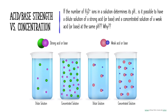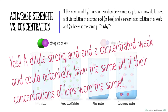The second question: if the number of hydronium ions determines pH, is it possible for a dilute solution of a strong acid and a concentrated solution of a weak acid to have the same pH, and why? The answer is yes. Looking at those two beakers, a diluted strong acid and a concentrated weak acid could potentially have the same pH if their ion concentrations are equal — the strong acid is diluted while the weak acid is concentrated, balancing out the hydronium ion concentrations.